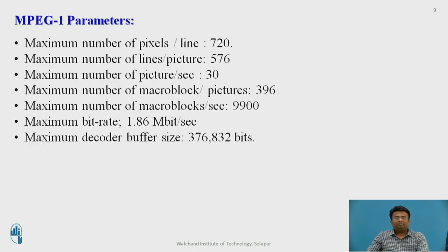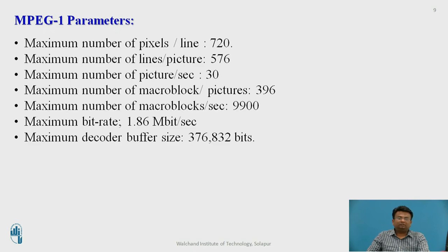The parameters supported by the MPEG-1 standard are: maximum number of pixels per line — 720; maximum number of lines per picture — 576; maximum frame rate — 30 pictures per second; maximum number of macroblocks — 396; maximum number of macroblocks per second — 9,900; maximum bit rate — 1.86 Mbps; and maximum decoder buffer size — 376,832 bits.